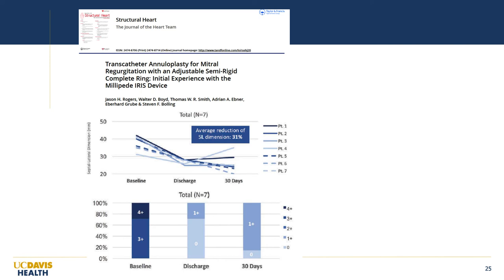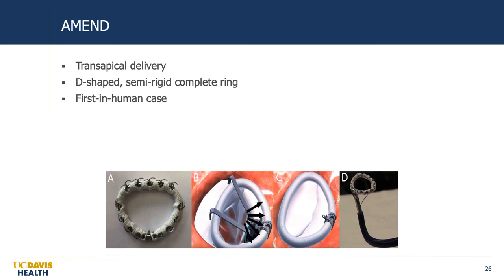The third direct annuloplasty device is the Amend system, which uses a transapical delivery approach. The device can reform through the catheter into a rigid D-shaped complete ring, with a series of anchors extruded from the device for initial posterior anchoring, then the device is pulled forward to the anterior annulus and fully anchored. A first-in-human case has been reported.